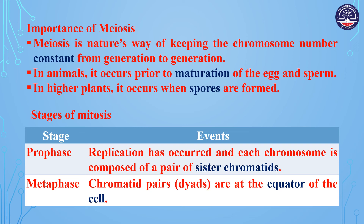In animals, meiosis occurs prior to maturation of the egg and sperm. In higher plants, it occurs during spore formation.